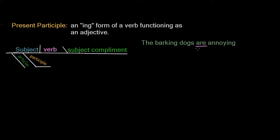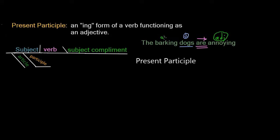It's a linking verb, linking our subject to a predicate adjective: 'annoying.' 'Dogs' is our subject. 'Annoying' is our subject complement — in this case a predicate adjective — which we could diagram as a present participle also, but for simplicity's sake we'll just call it an adjective. Our present participle is 'barking.' It functions as an adjective, but it's a participle — a present participle.